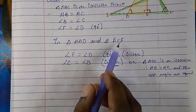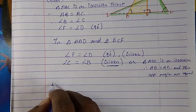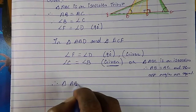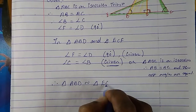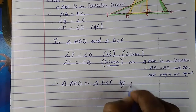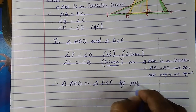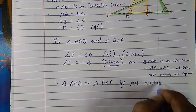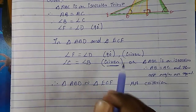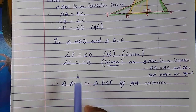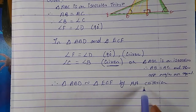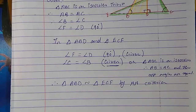Therefore, triangle ABD is similar to triangle ECF by the AA criteria. Both the angles are equal — two angles are equal in the two triangles — therefore by the angle-angle criteria, they become similar. That's it.